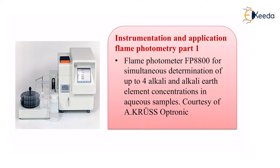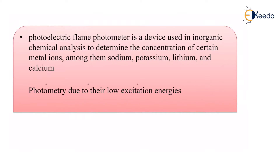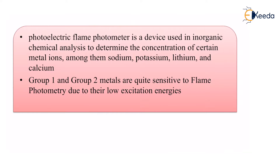For a determination of these particular elements, we use this flame photometer. A photoelectric flame photometer is a device used in inorganic chemical analysis to determine the concentration of certain metal ions — sodium, potassium, lithium, and calcium. All these metal ions are positive in nature; they will have a plus charge: Na+, K+, Li2+, Ca2+, and so on. Group 1 and group 2 metals are quite sensitive to flame photometry due to their low excitation energies, and we take advantage of that to determine them.